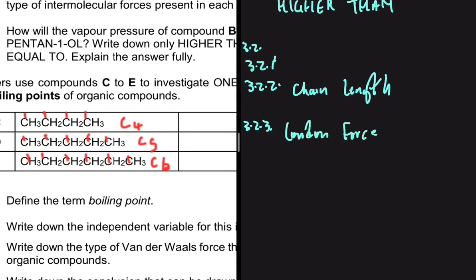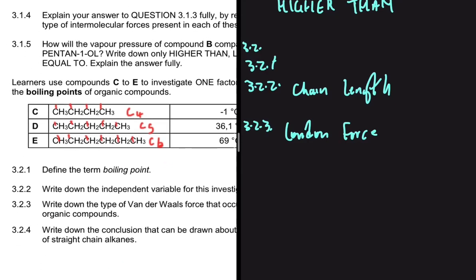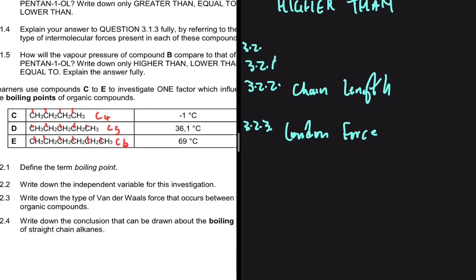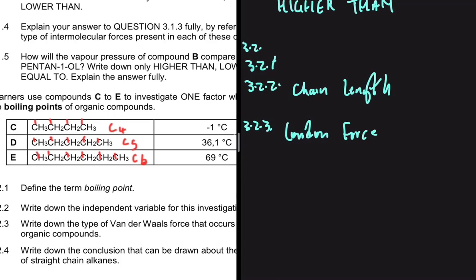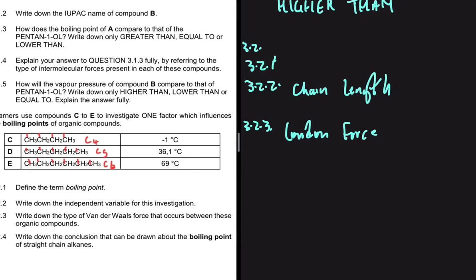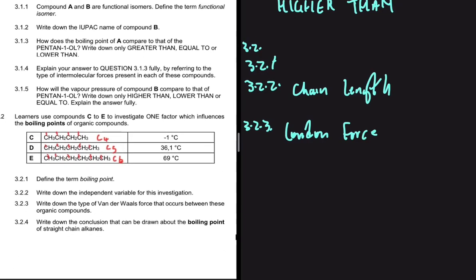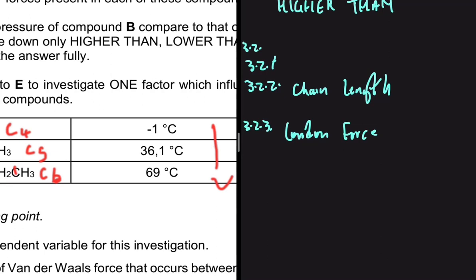For 3.2.4, write down the conclusion that can be drawn about the boiling point of straight-chain alkanes. Looking at the diagram, as the number of carbons increases, the boiling point increases from minus 1 to 36.1 and lastly to 69. We can conclude that as the chain length increases, the boiling point increases. If you used molecular mass in 3.2.2, you would say that as the molecular mass increases, the boiling point increases.